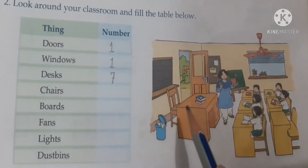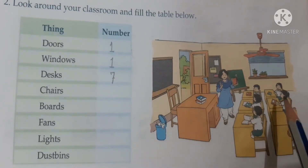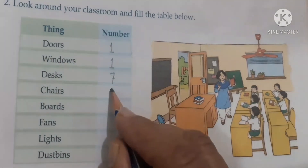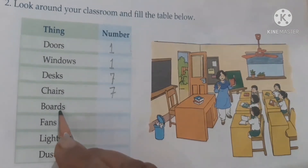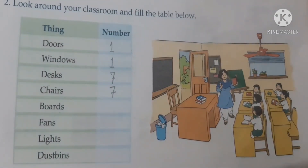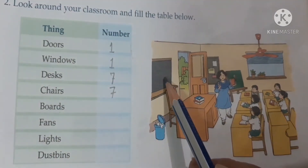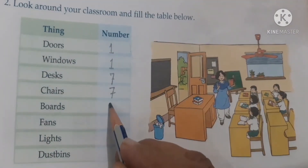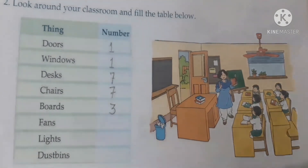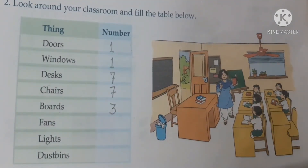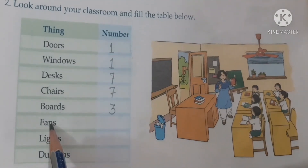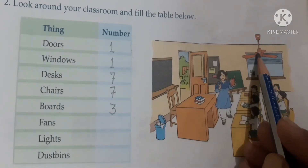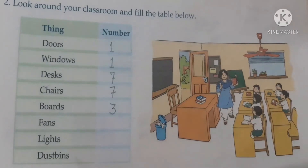How many chairs are in the classroom? Seven chairs are there. Next — boards. How many boards are there in the classroom? 1, 2, 3 — three boards are there in the classroom, so write 3.